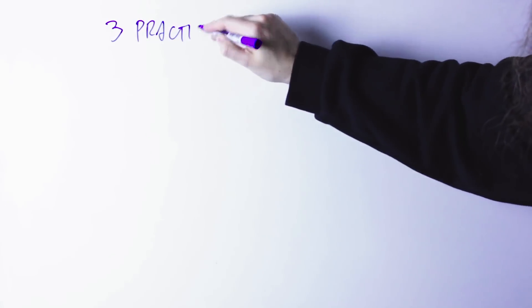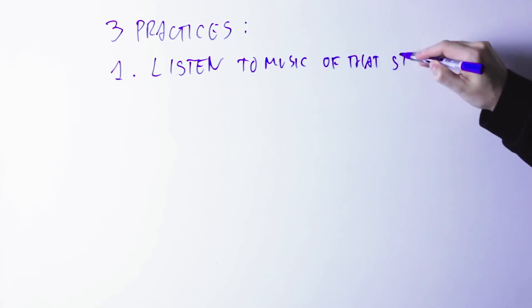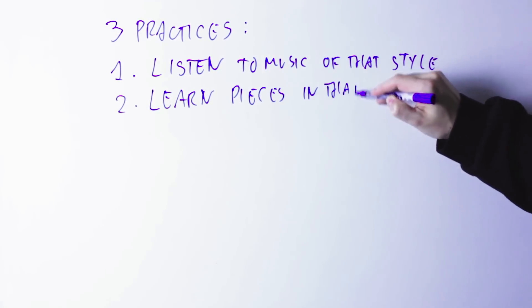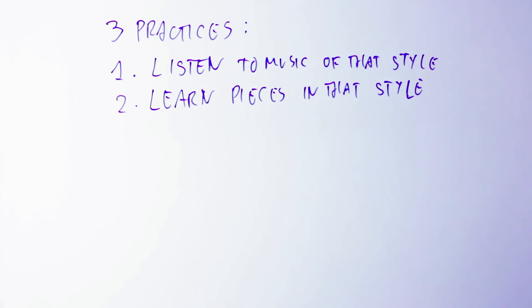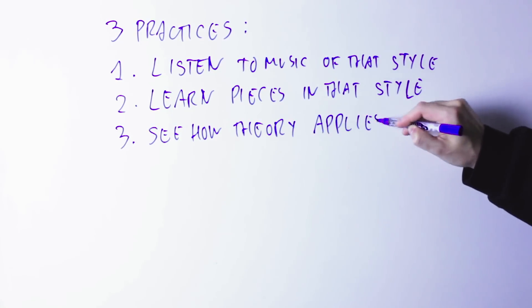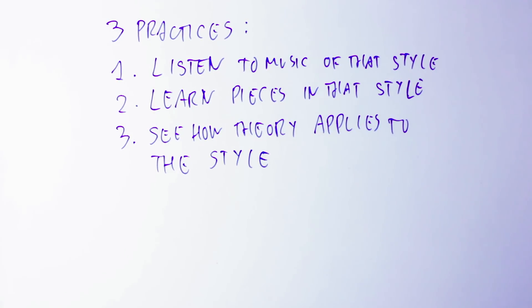So there are three main practices you want to implement to learn a specific style of music. The first one is that you have to listen to music of that style — it's kind of obvious, but many composers don't do that. The second practice is that you have to learn pieces of that style, meaning you actually have to be able to play a few of those pieces, even if not well, because just by learning them on your instrument you will notice much more what makes those pieces tick. The third practice is to see how theory applies to that style. Theory is universal and applies to all styles, but the way it applies to different styles is slightly different.